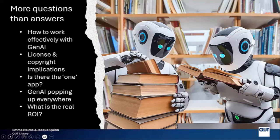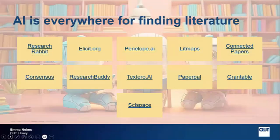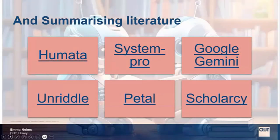Gen AI is appearing in MS Office, Adobe, databases and ebook platforms. Will there be additional costs and what about equity of access? Will universities subscribe to these additional tools and what is the real return on investment? AI is everywhere for finding literature and summarizing literature. Please comment on more apps that you're using and what you think of them in the chat.